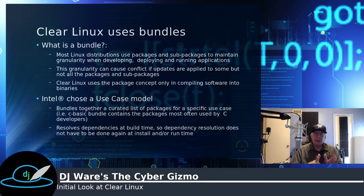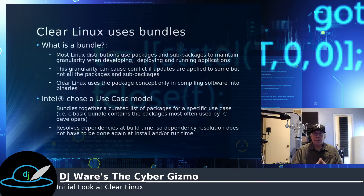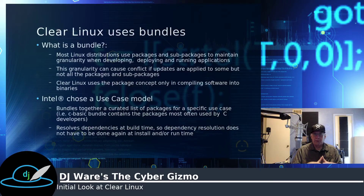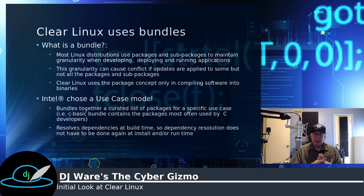Intel also provides a list of packages through bundles tied to a use case. So you have a C developer use case bundle, a Python developer, a Ruby developer, or a Golang developer set of use cases, and it installs the tools that developer will need in order to create and write deployable applications. Again, it resolves dependencies at build time and not when you're trying to roll to production.